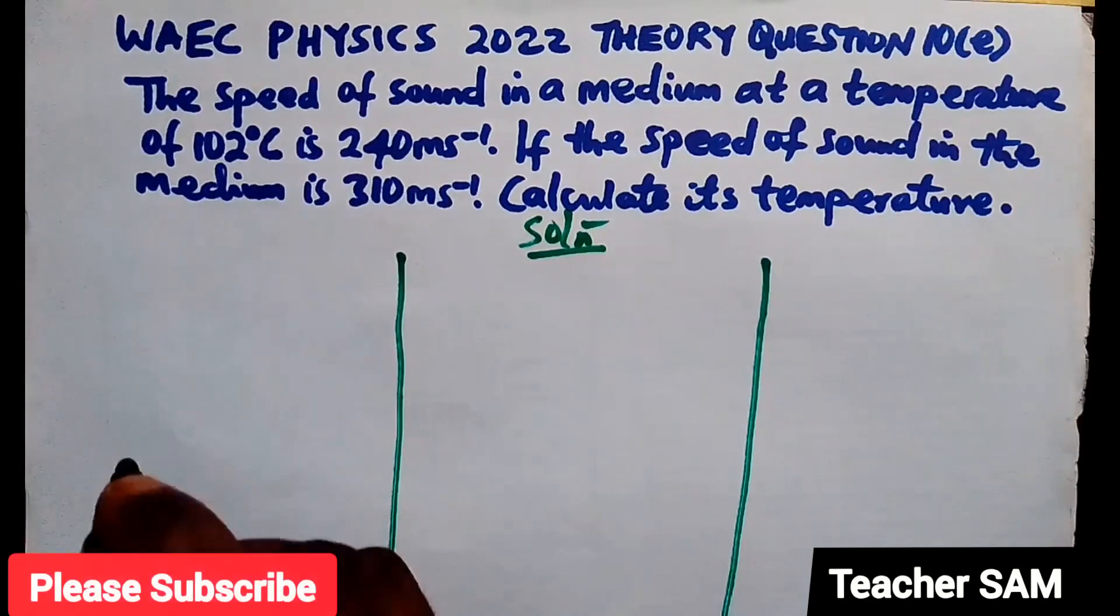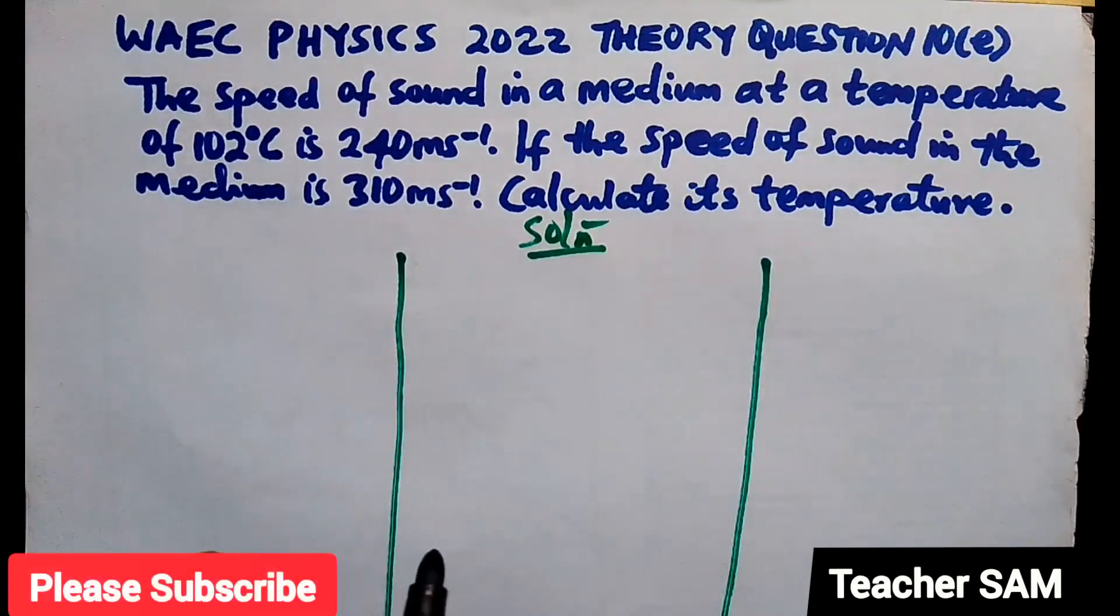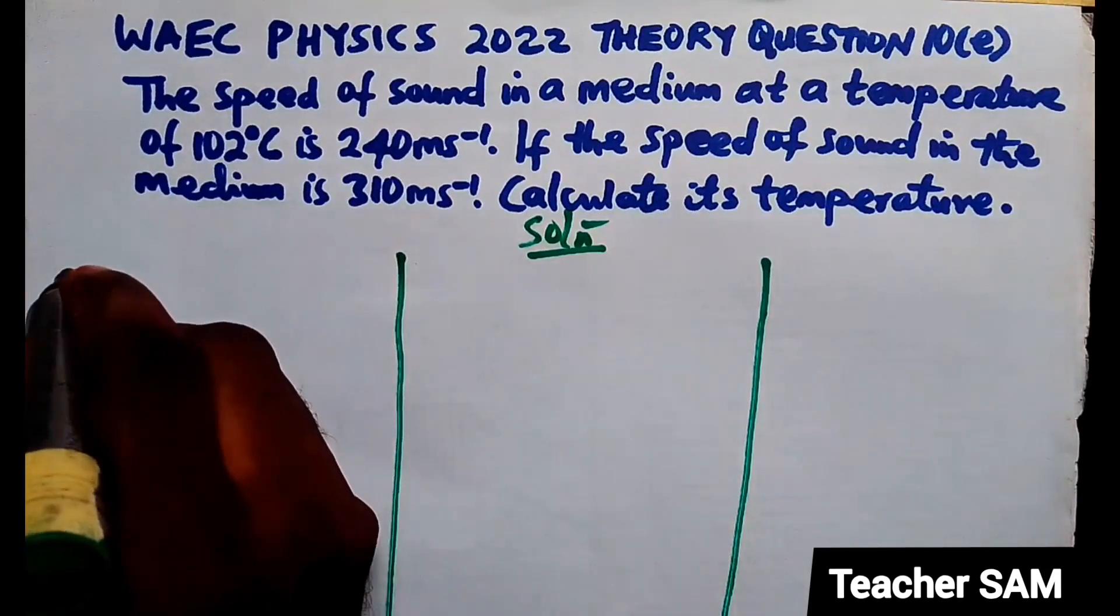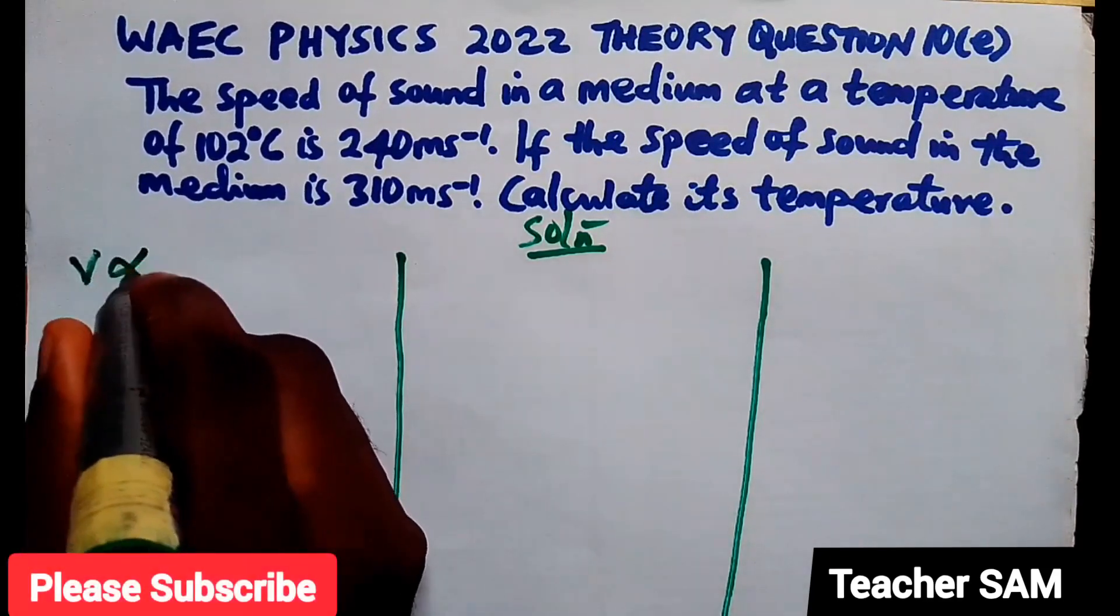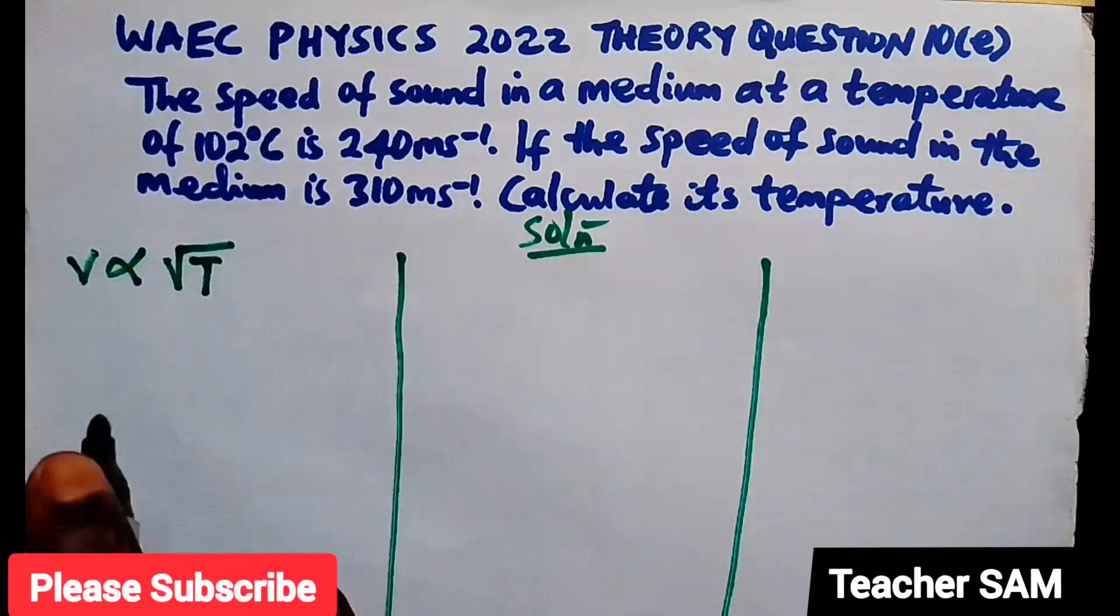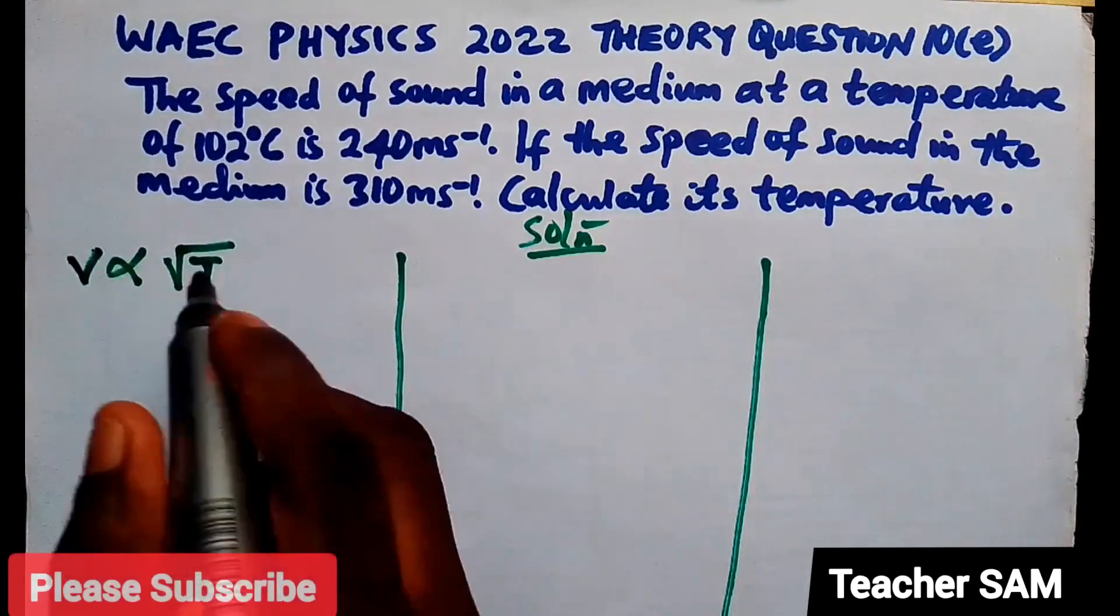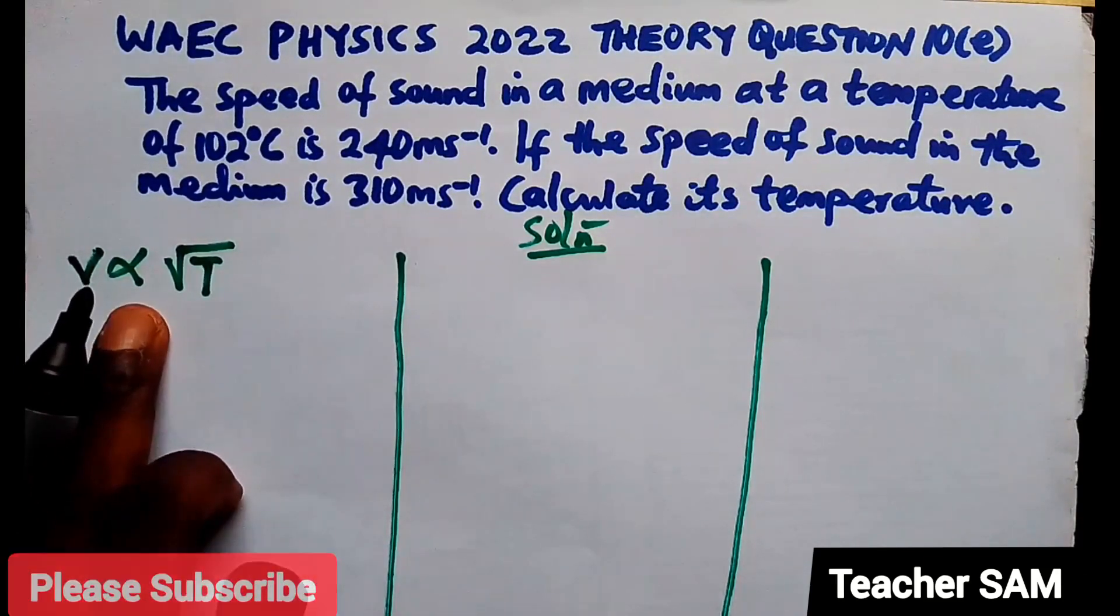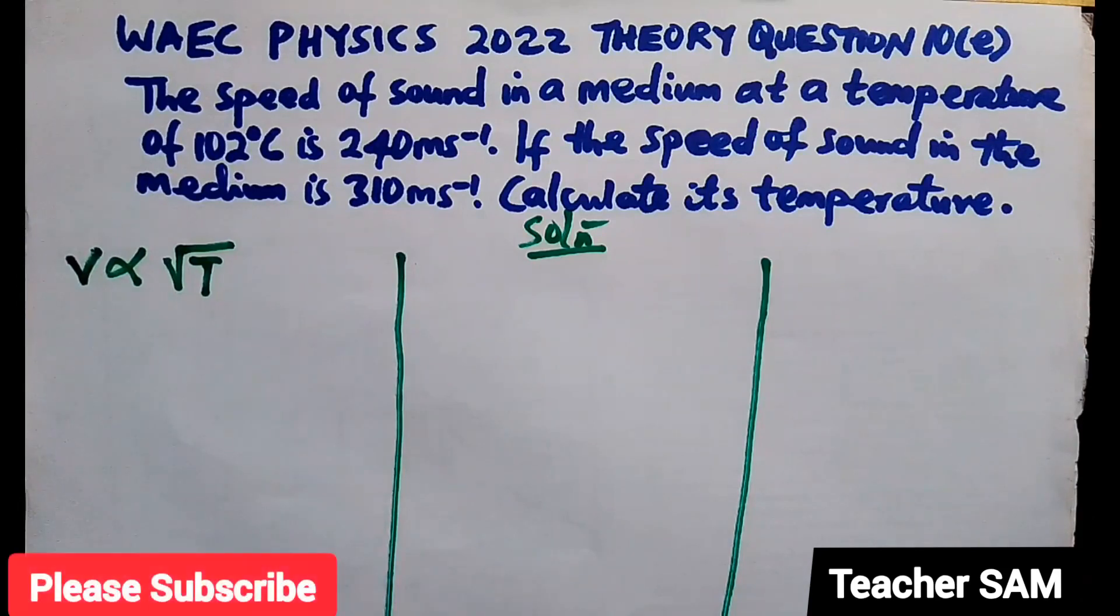Now, we know that for our speed of sound and the temperature, there is a relationship that relates this two. We know that the speed V is proportional to the square root of the temperature. So, if the speed is V and the temperature is T, that the speed of sound is directly proportional to the square root of the temperature.